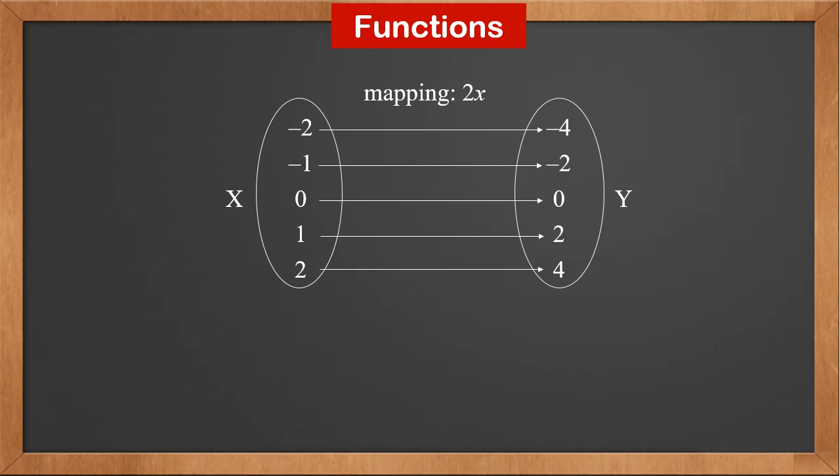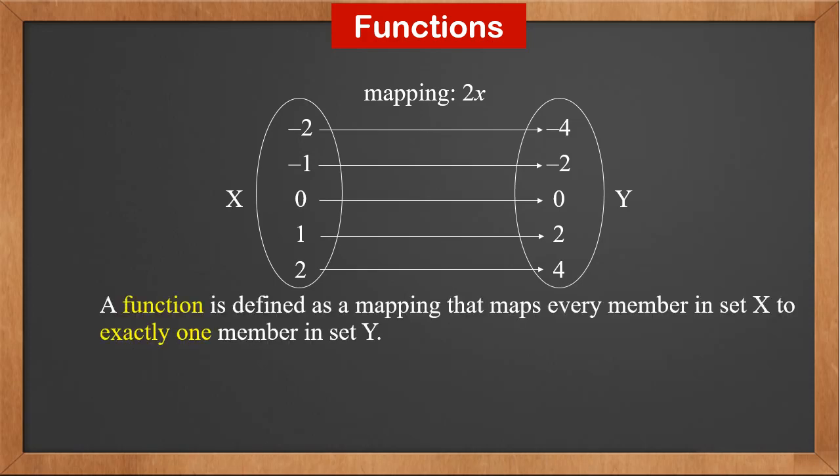This mapping is called a function. A function is defined as a mapping that maps every member in set x to exactly one member in set y. Set x is called the domain. Set y is called the range.